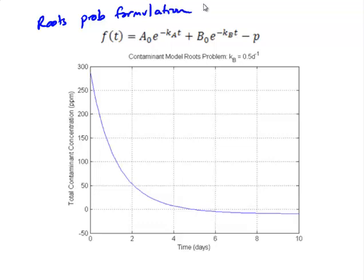Here's our root problem formulation. And our value of the time that it takes to reach this standard, for in this case KB equals 0.5, would be the root of this function, or where this function equals 0. And we can see that on the graph right here between 4 and 6.